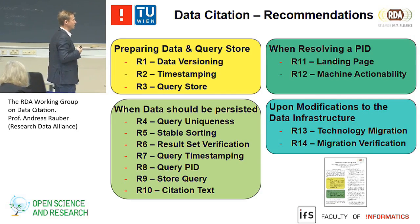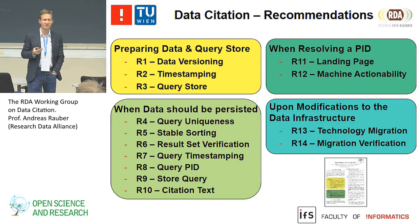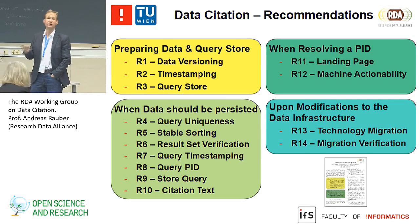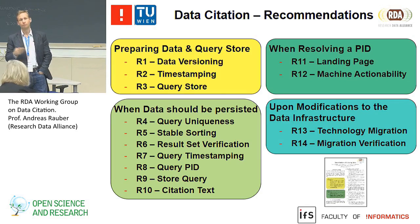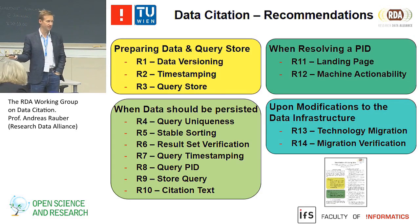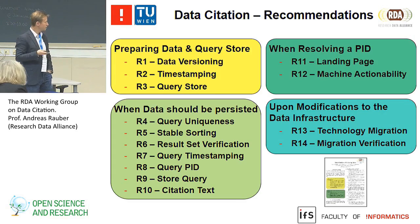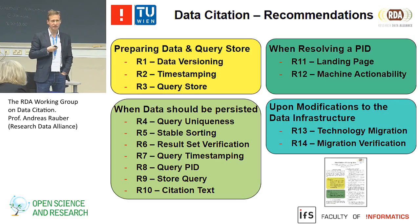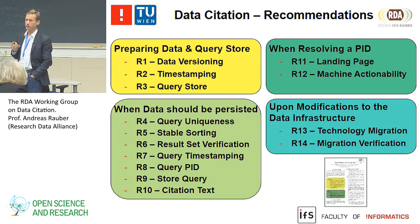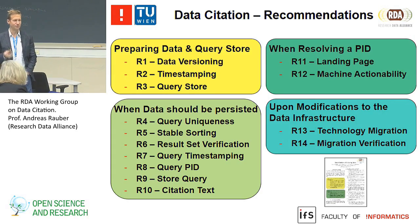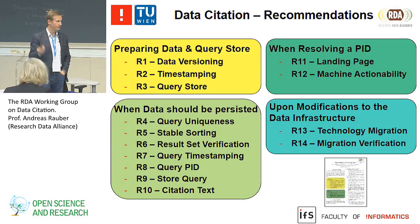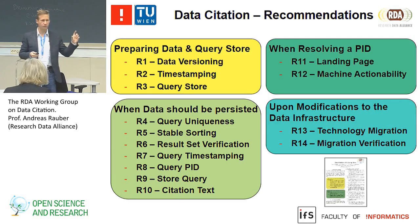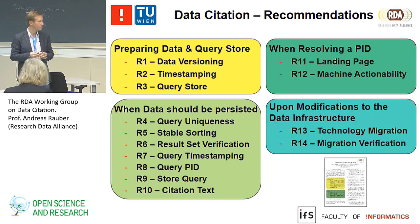Resolving a PID leads to a landing page—nothing surprising here. That landing page should allow you to download the original data if access is granted depending on rights, and potentially also the current version of the same subset. Recommendation 12 is really on machine actionability: those landing pages should not be just human-readable. We want to support automated repetition of studies and automated crawling of data, where fair data point protocols come into play.